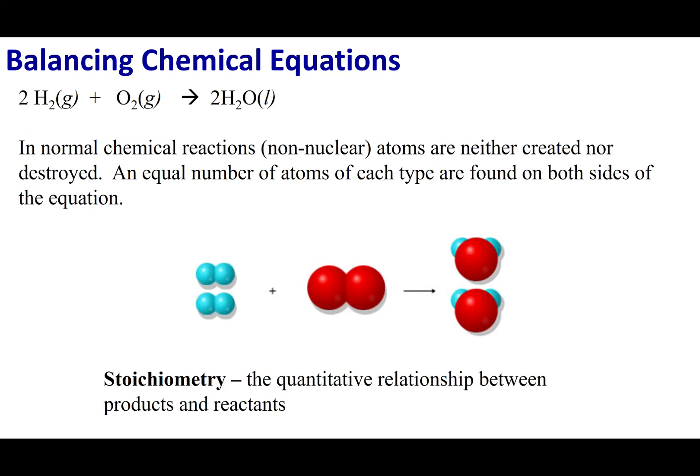A key thing to remember is that we have to balance chemical reactions. Going back to the first lecture, the weight of the reactants equals the weight of the products. The only way this can happen is if we have the same number and type of atoms on both sides of the chemical arrow — every atom on the reactant side must be present on the product side.